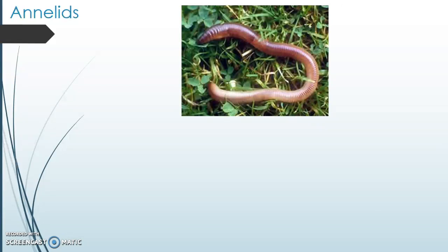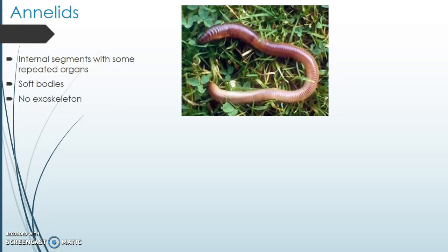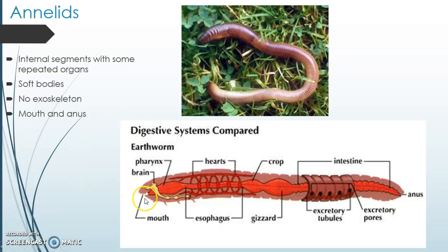Time to move into a slightly more complex group of organisms called the annelids. Hopefully you recognise that organism — I've put it up because I want you to realise that it's made up of lots and lots of little segments. All those bands around its body are individual segments, and in each of those segments there's a certain group of organs that repeat over and over again. They have soft bodies, no exoskeleton, and lucky them, they have a mouth and an anus, so they don't have to poop out their mouths. The food they eat goes through, gets digested in their crop and gizzard, and the nutrients get absorbed into their intestines and it comes out the rear end.